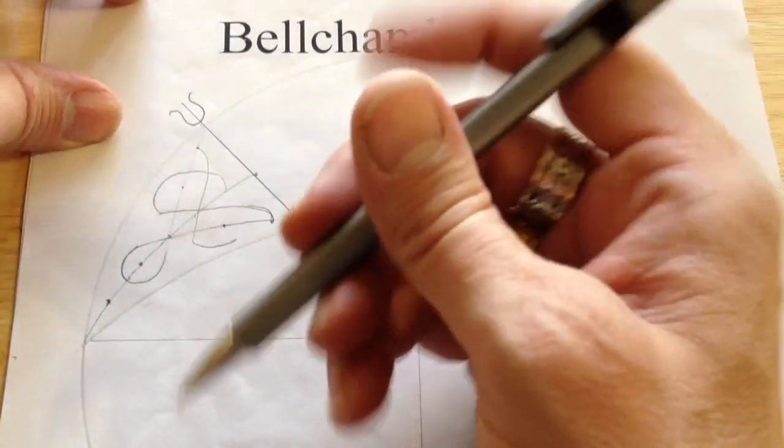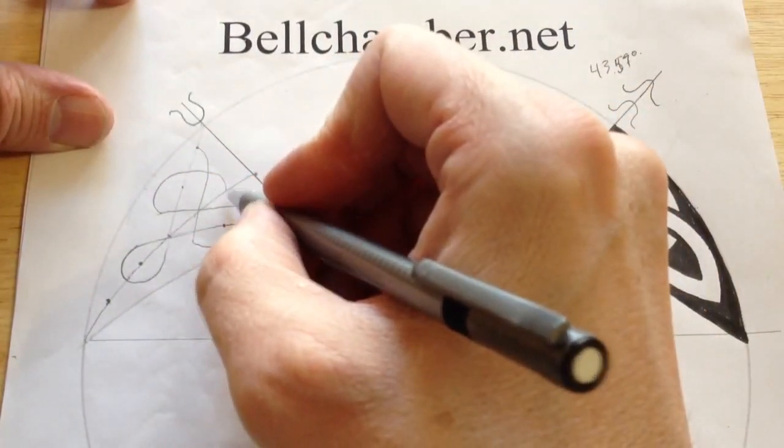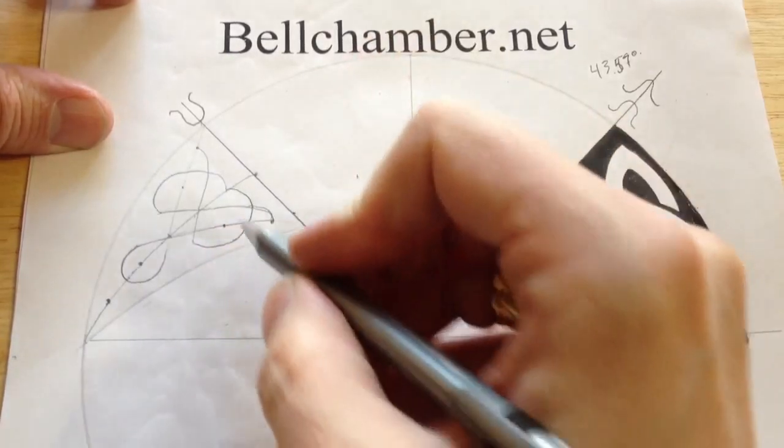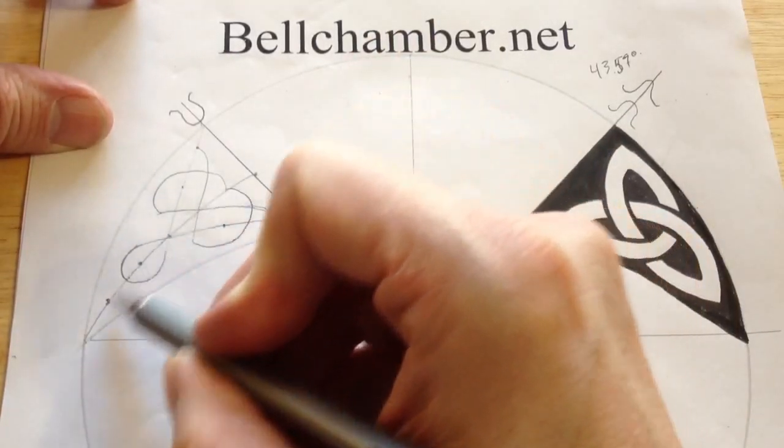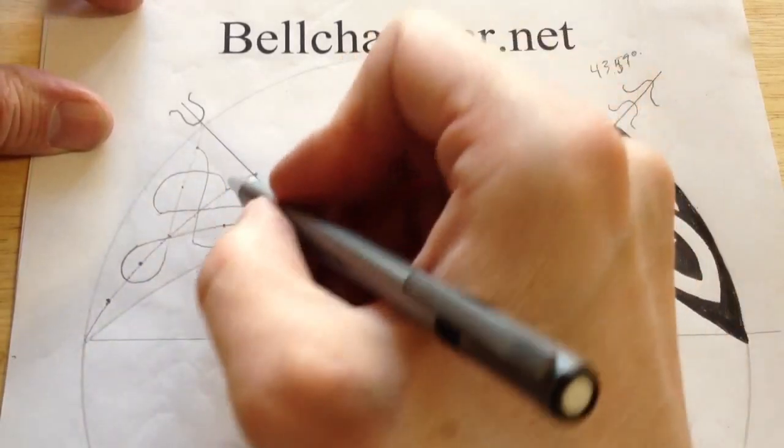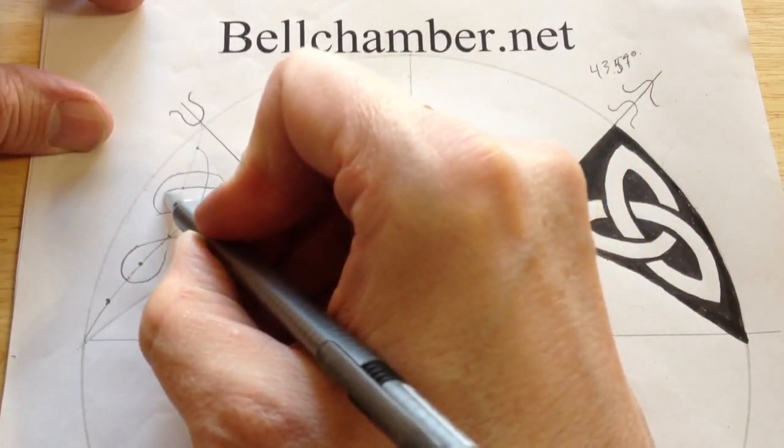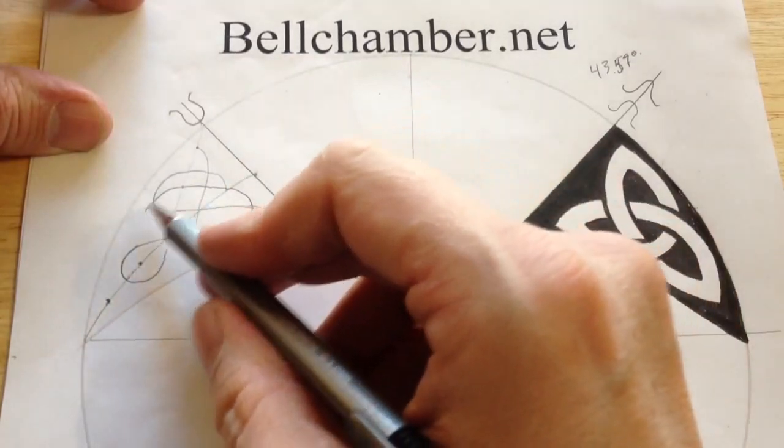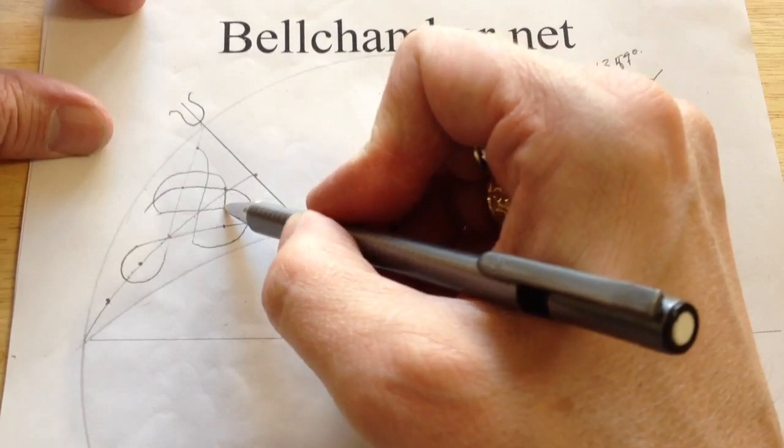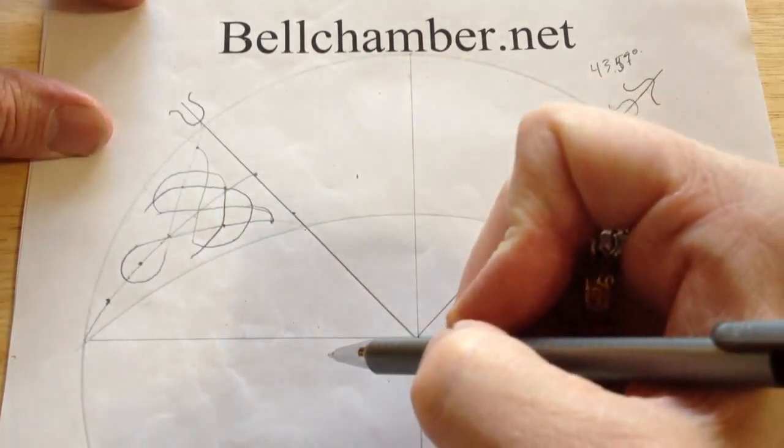So, take your pencil and what we're going to do is continue the pattern. This one's going to come down. So you can see you start making mirrored images along your axis here. Now this pattern is going to go up here in between as is this one.